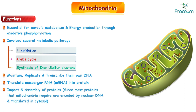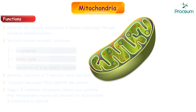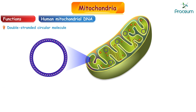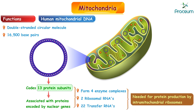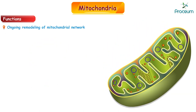The import and assembly of proteins is another important mitochondrial function, since most proteins that the mitochondria require are encoded by nuclear DNA and translated in the cytosol. Specifically, human mitochondrial DNA is a double-stranded circular molecule containing approximately 16,500 base pairs, compared with over a billion in nuclear DNA. It codes for 13 protein subunits associated with nuclear-encoded proteins to form four enzyme complexes, plus two ribosomal and 22 transfer RNAs needed for protein production by the intramitochondrial ribosomes.